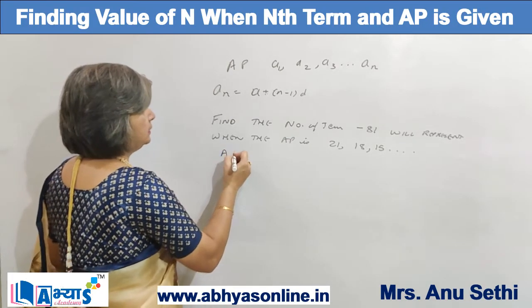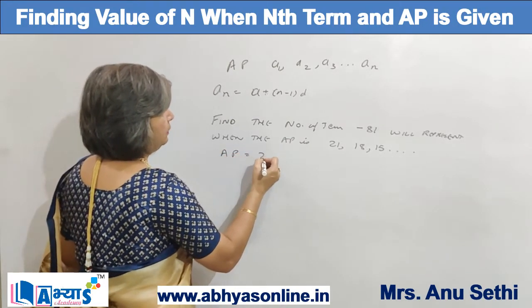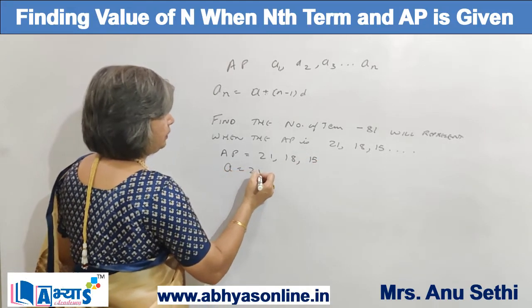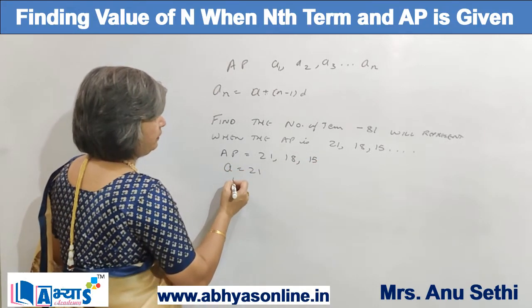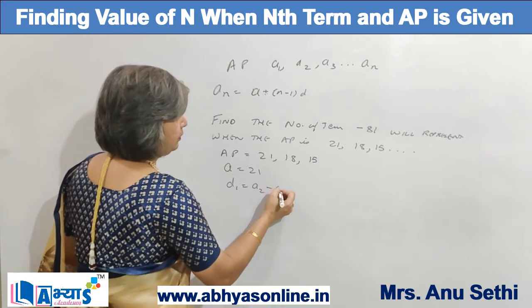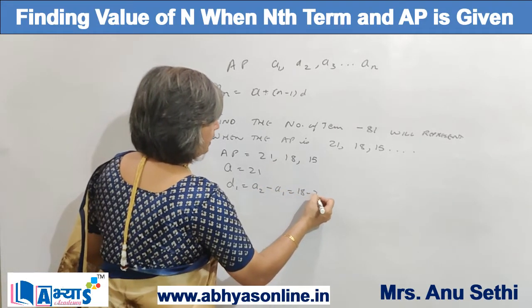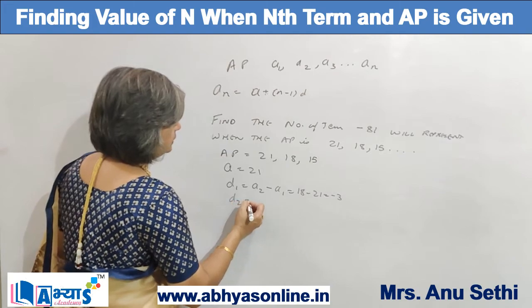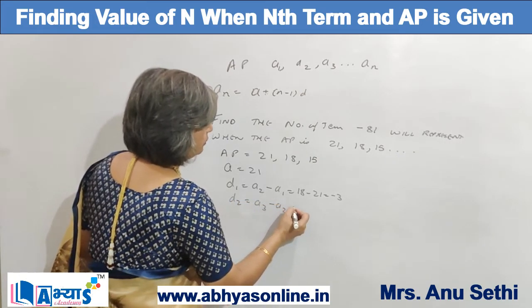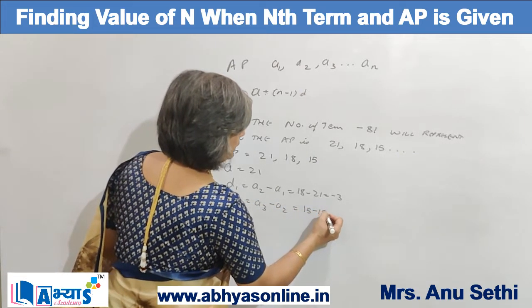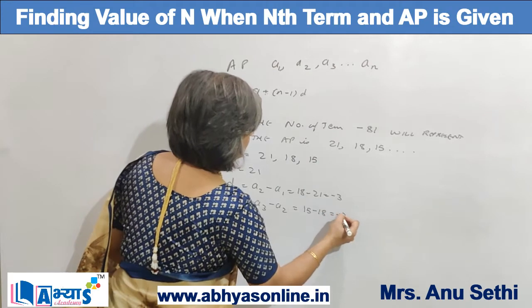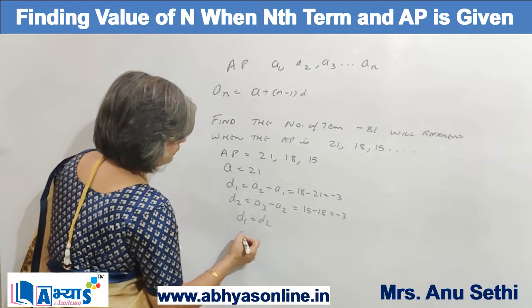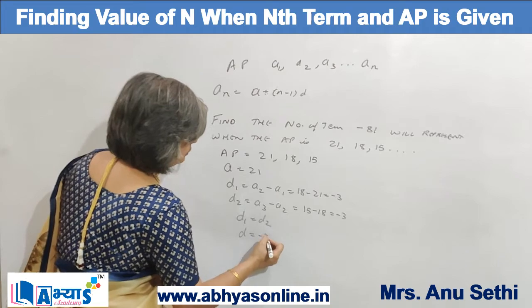As the AP is 21, 18, 15, so a = 21. Now we find d: d1 = a2 - a1 = 18 - 21 = -3. And d2 = a3 - a2 = 15 - 18 = -3. As d1 equals d2, the common difference d = -3.